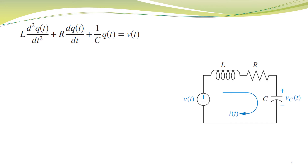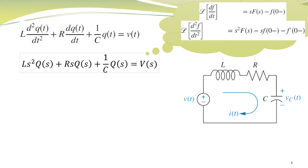You already remember that the Laplace transform converts a differential equation into an algebraic equation, which greatly simplifies things. Let's take the Laplace transform of the differential equation. The Laplace transform of the derivative of a function f(t) is equal to sF(s) minus f(0), where f(0) is the initial condition. Taking all initial conditions equal to zero, the first equation in Laplace domain becomes: Ls²Q(s) + RsQ(s) + (1/C)Q(s) = V(s).